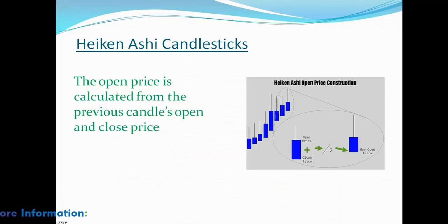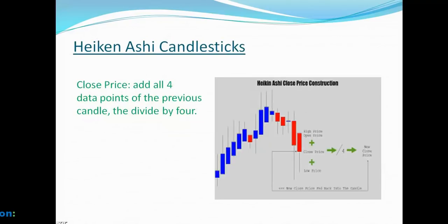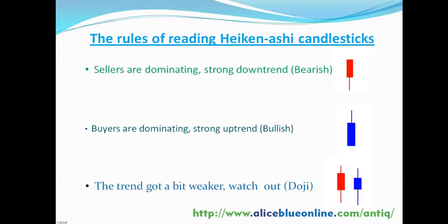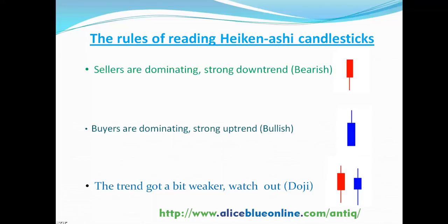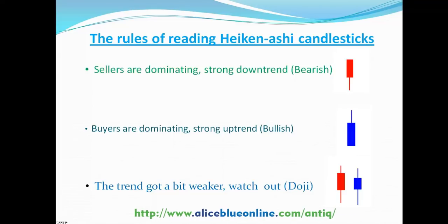The Heikin Ashi open price is calculated from the previous candle's open and close price, as shown in the picture. The Heikin Ashi close price is calculated by adding all four data points of the previous candle, then dividing by four, as seen in the picture.